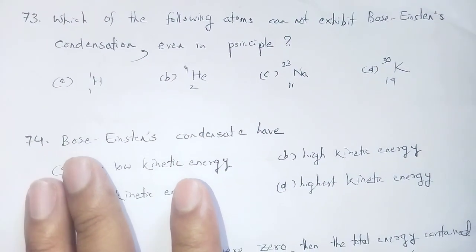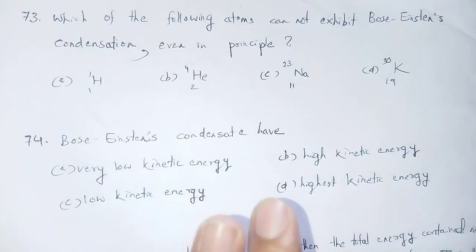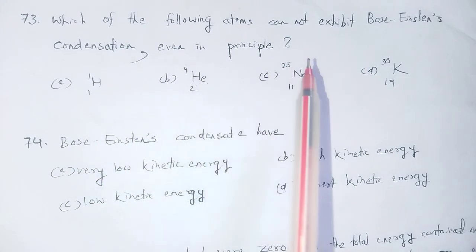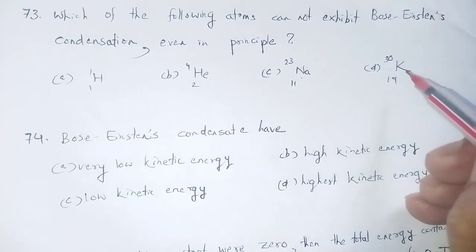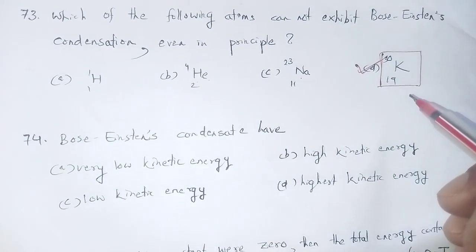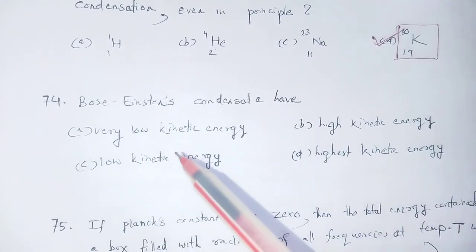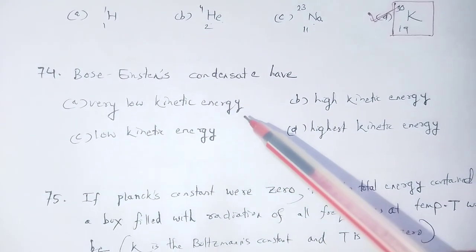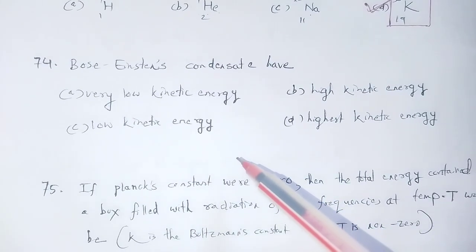Question 72: Which of the following atoms cannot exhibit Bose-Einstein condensation even in principle? According to Bose-Einstein condensation, atoms such as hydrogen, helium, sodium, and potassium (19K39) can form Bose-Einstein condensates. Bose-Einstein condensates have very low kinetic energy, not high or highest kinetic energy.